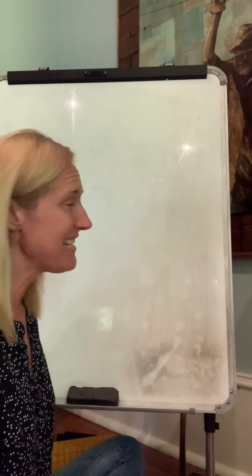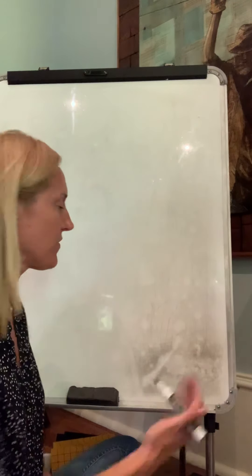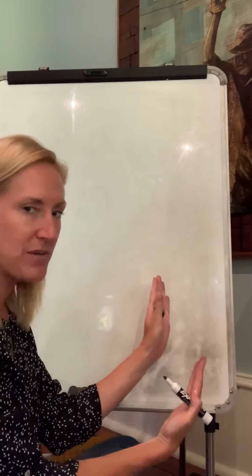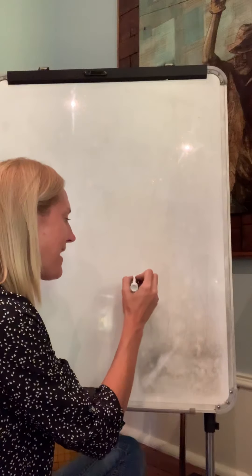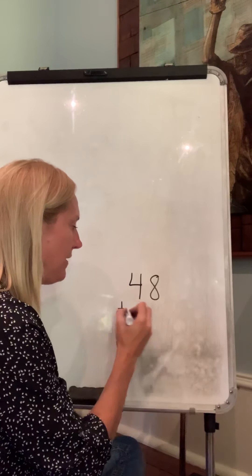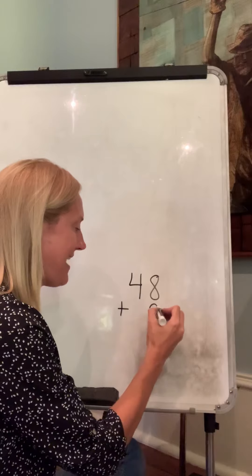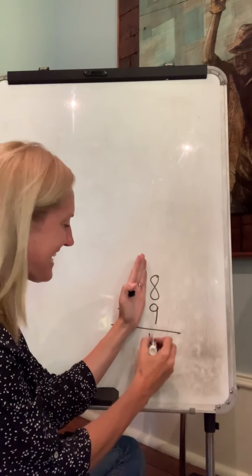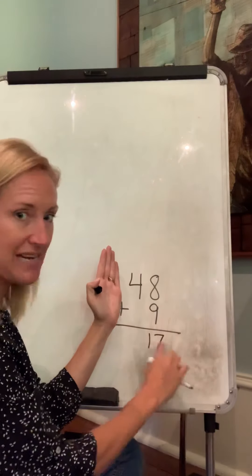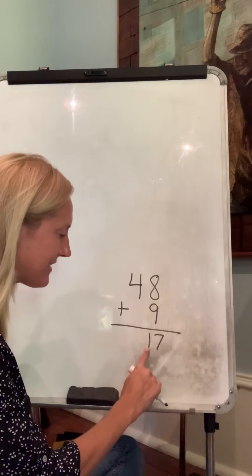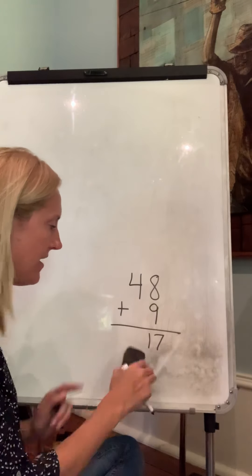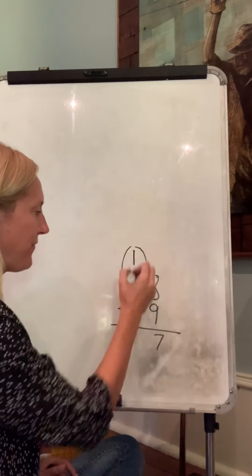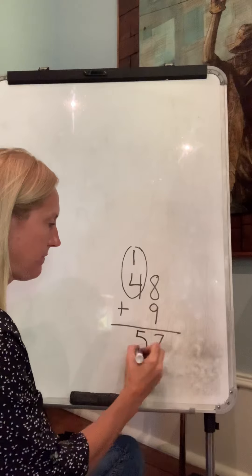But just like in the real world when we're adding numbers, sometimes when we're adding it up, it adds up to something greater than nine. For instance, we might have forty-eight plus nine. So we're going to add up our ones. Well, nine plus eight is seventeen. I can't put two digits down here. Seventeen - this is actually a ten, ten plus seven. So it needs to go with the tens. We have one more ten, so now I have five tens. Fifty-seven.